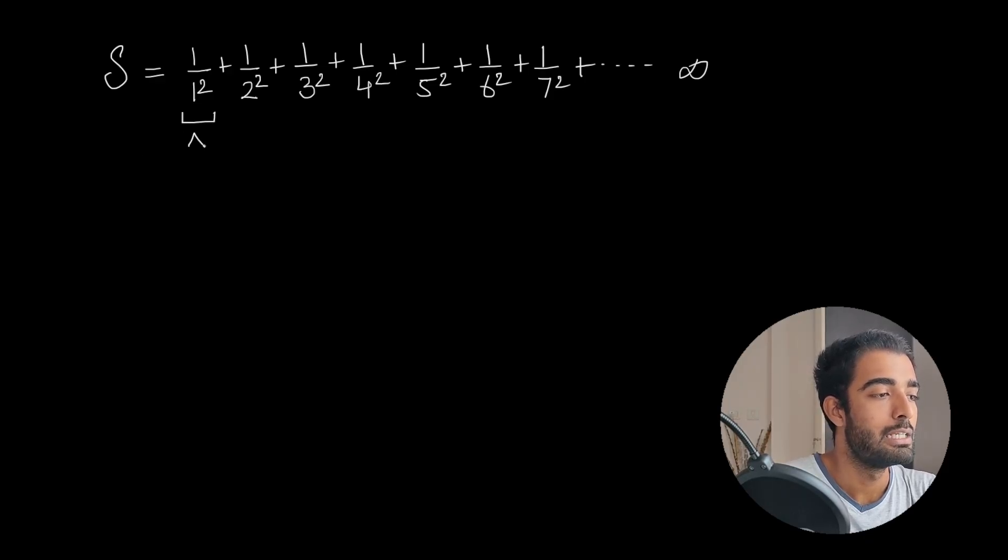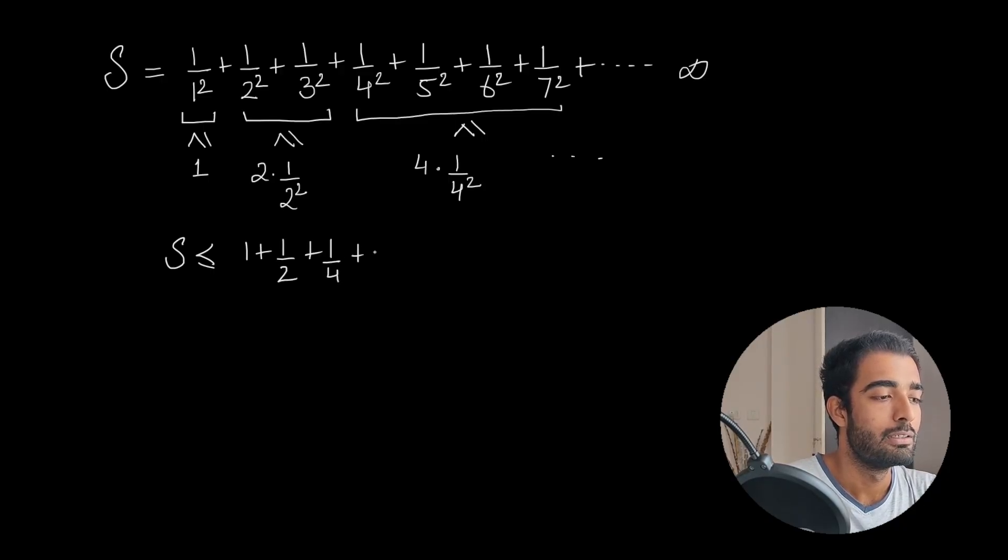This part is less than or equal to 1. This part is less than or equal to 2 times 1/2² since 1/3² is less than 1/2². These four terms are less than 4 times 1/4² using the same logic, and so on. So we get S is less than or equal to 1 + 1/2 + 1/4 + ... to infinity, and we know this sums to 2. So S is less than 2, hence this series is convergent.